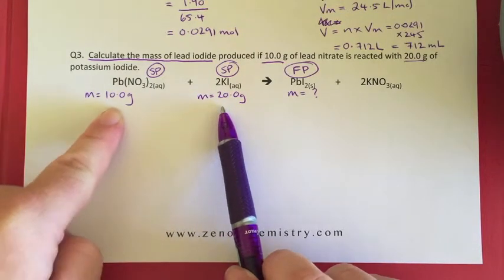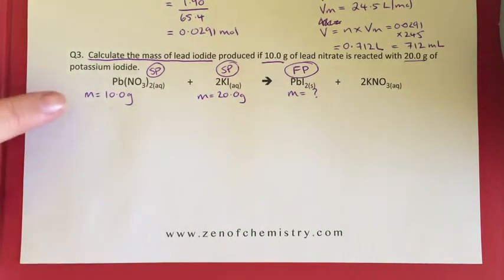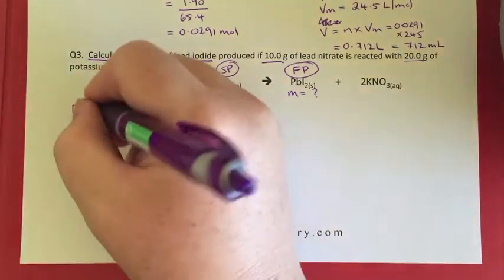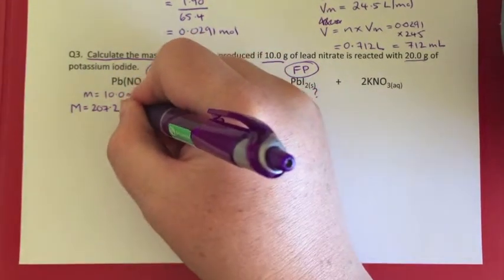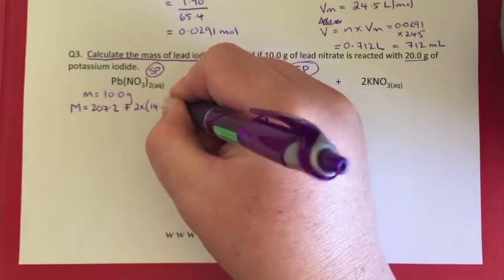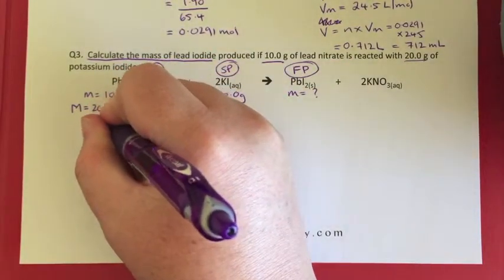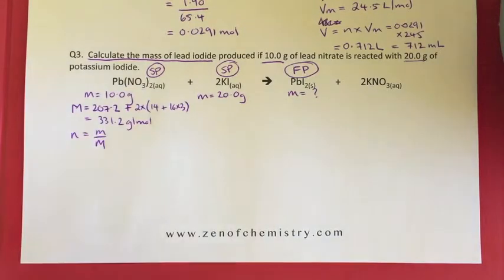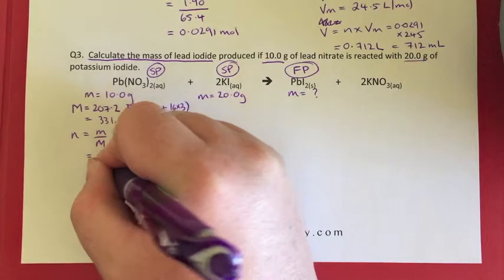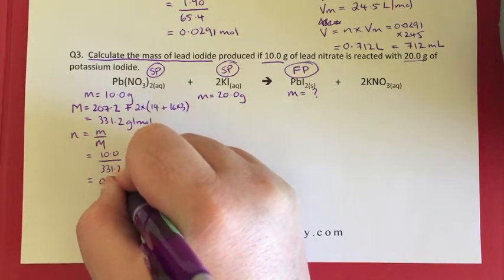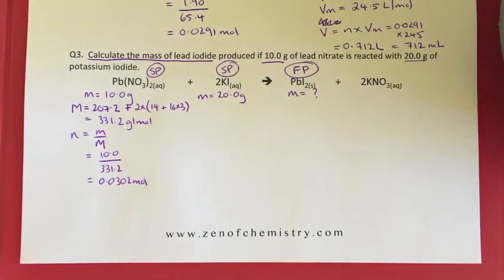The only way we can do that is to start by calculating the number of moles. So we'll start with our lead nitrate. To work out number of moles we're going to need molar mass. Lead is 207.2 plus we've got two nitrates, so two times nitrogen is 14 plus 16 times 3. Our molar mass there is 331.2 grams per mole. Number of moles equals mass on molar mass which is equal to 10.0 divided by 331.2, and if we throw that in the calculator we get 0.0302 mole.